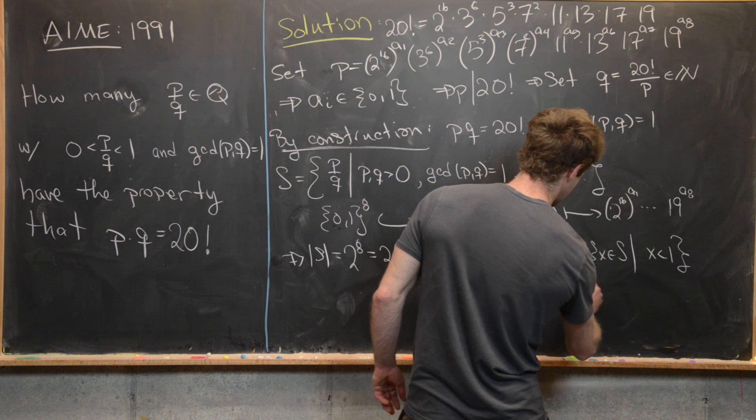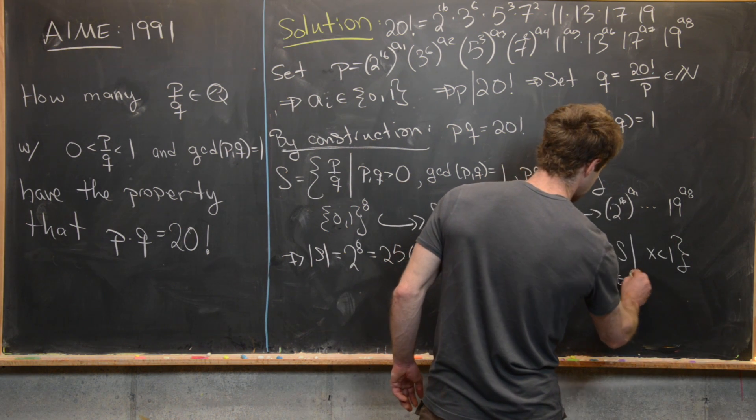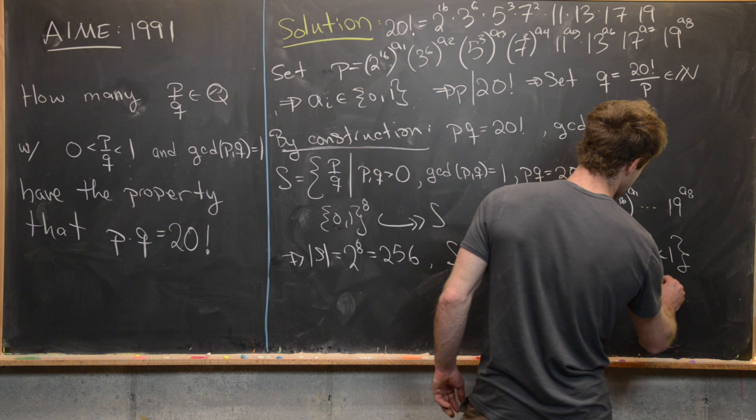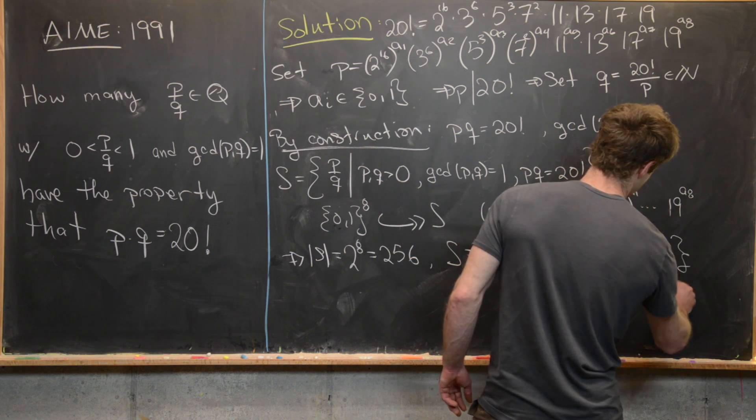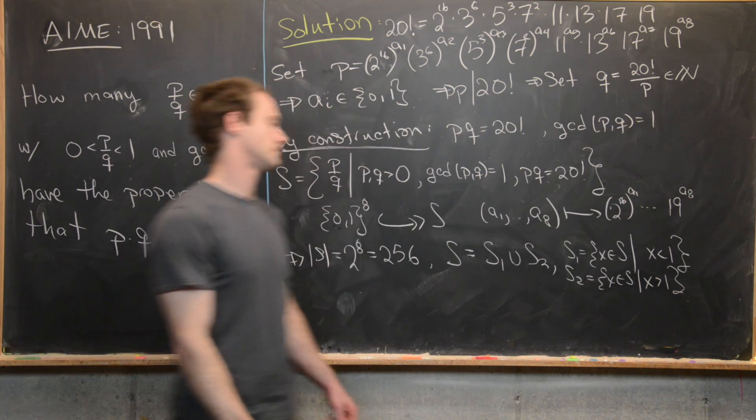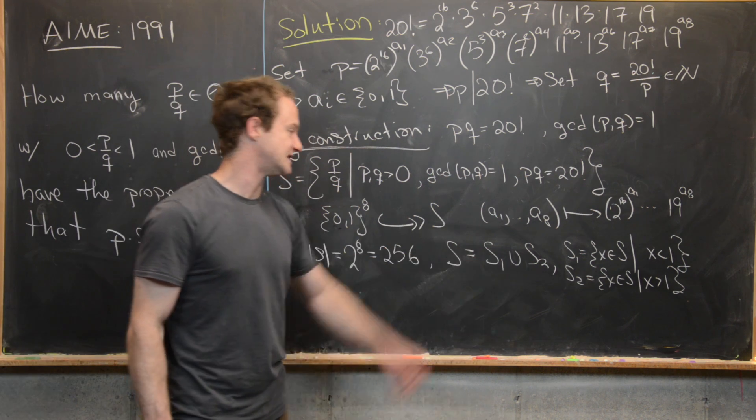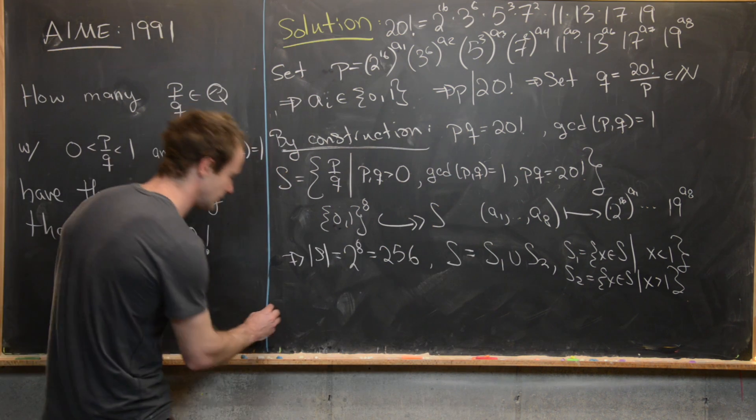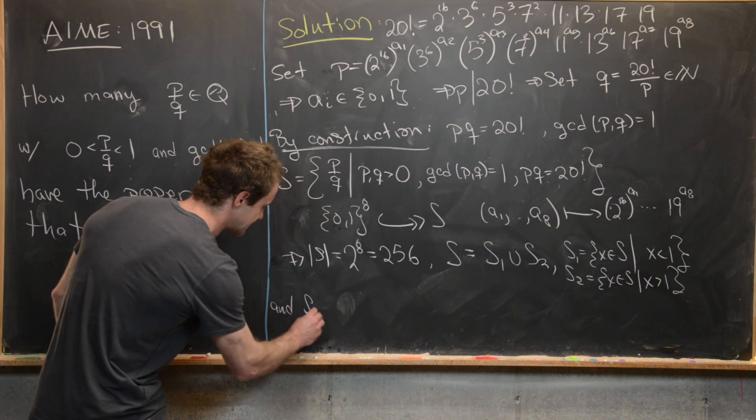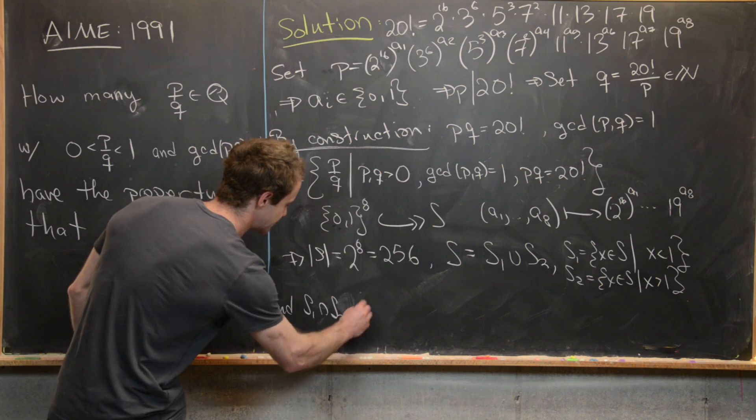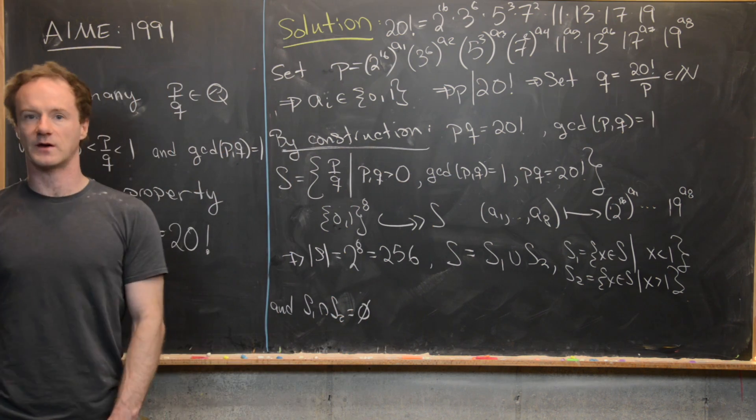and then S2 is all numbers X in S where X is bigger than 1. So it's pretty clear that S equals S1 union S2, and we can see that S1 intersect S2 is empty.